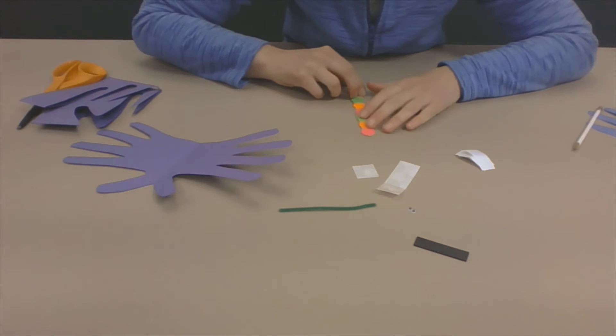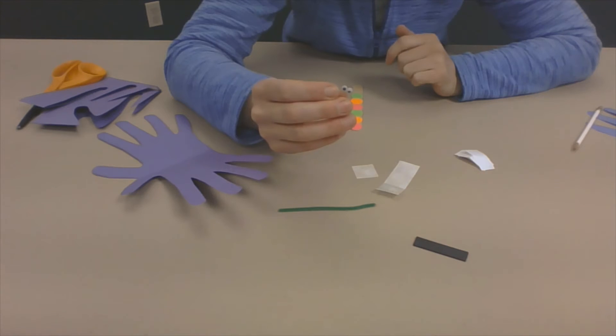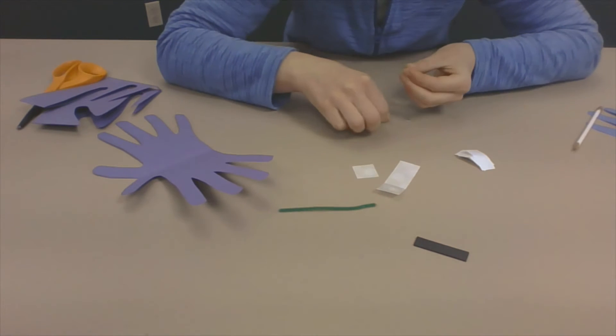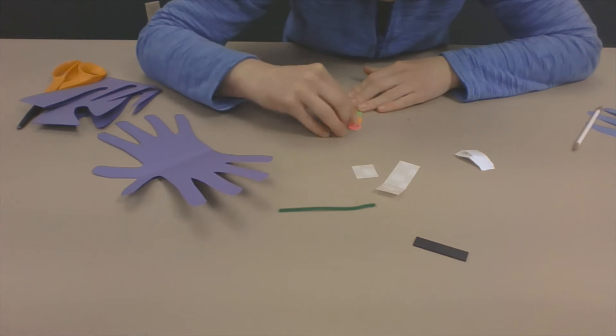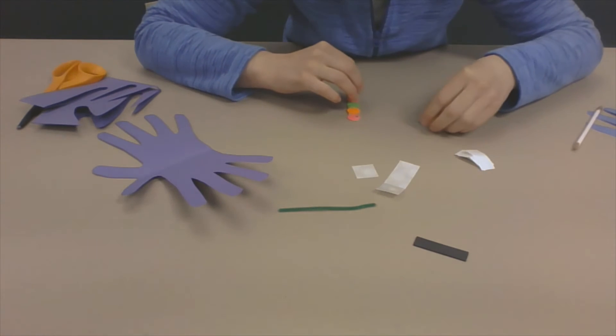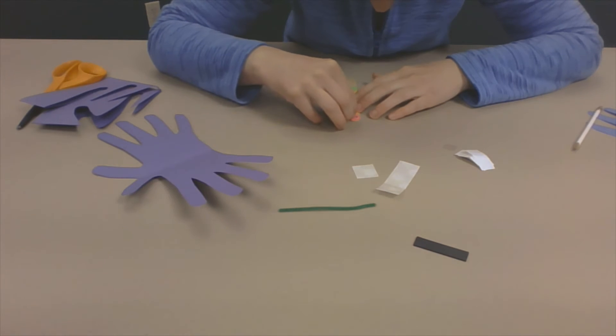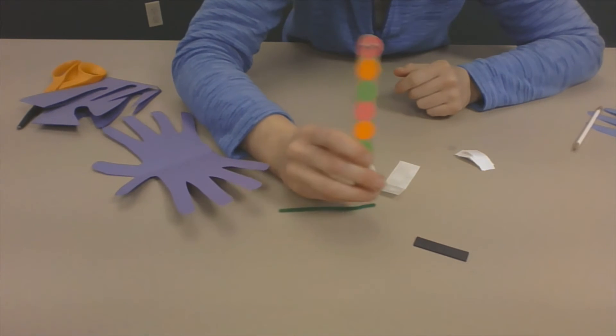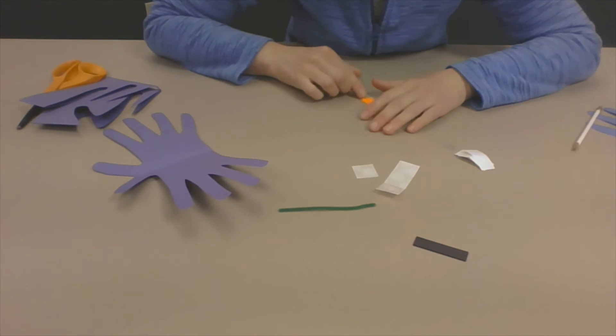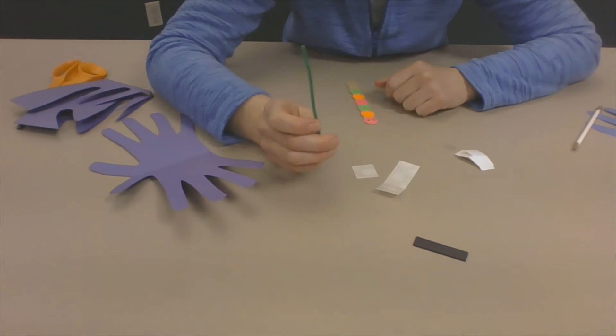And then I'm going to put my eyeballs on. And so remember what I said, I had eyeballs that already have sticky on them, but if you don't then you can use glue. Or if you don't have googly eyes you could also just color, take a marker and make eyes on your butterfly. Okay there's my eyeballs on my butterfly.